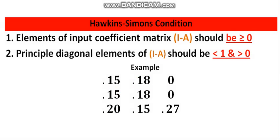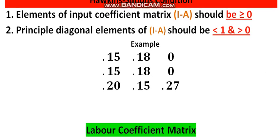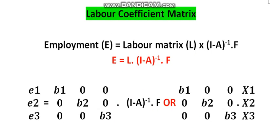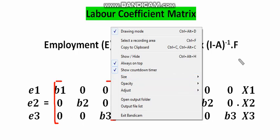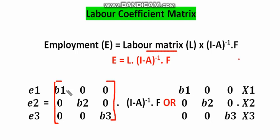Now let me move on to another important topic in input-output analysis: the labor coefficient matrix. When we need to find total employment in a given economic system, we use the labor coefficient matrix. This labor coefficient matrix is a diagonal matrix — meaning all elements are zero except the diagonal elements, which can take non-zero values.